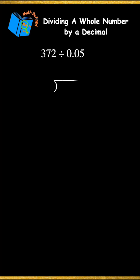Let's write this as a long division problem. The dividend of 372 goes inside the box and the divisor of 0.05 goes outside of the box.